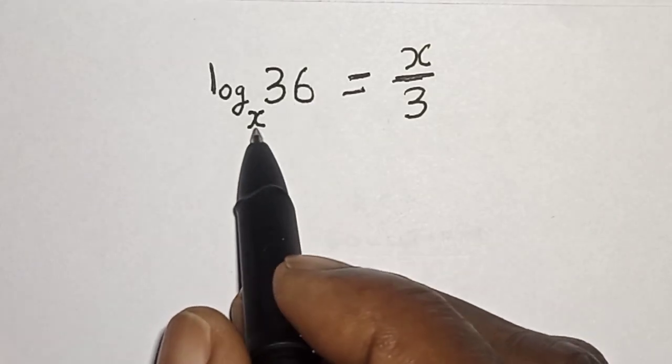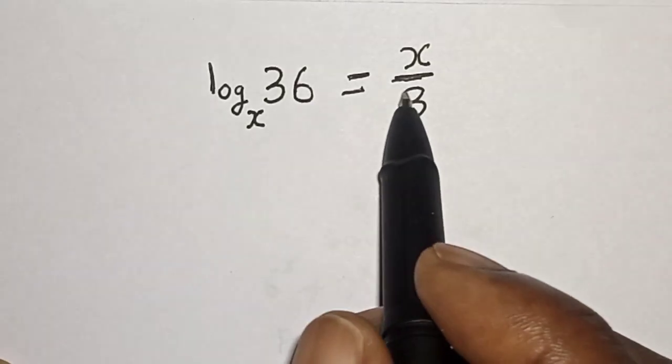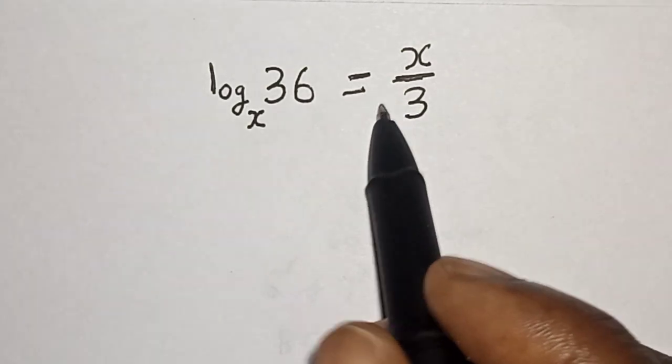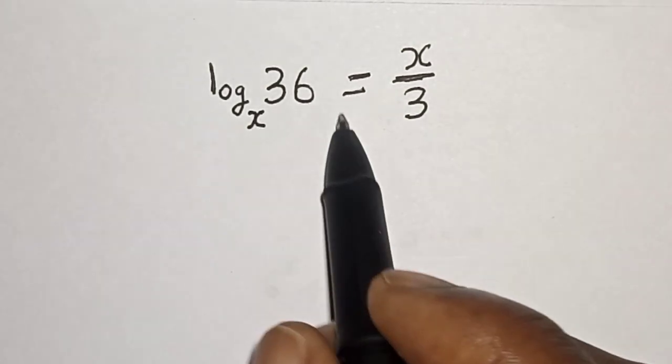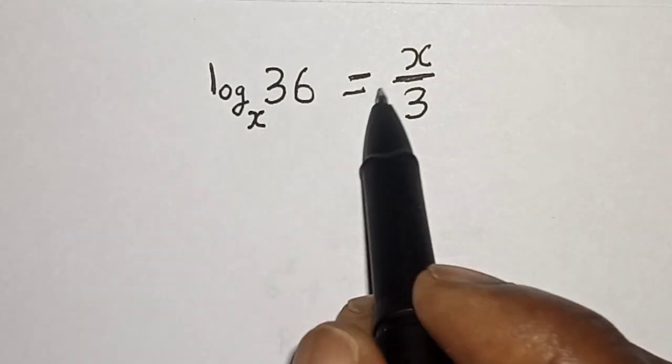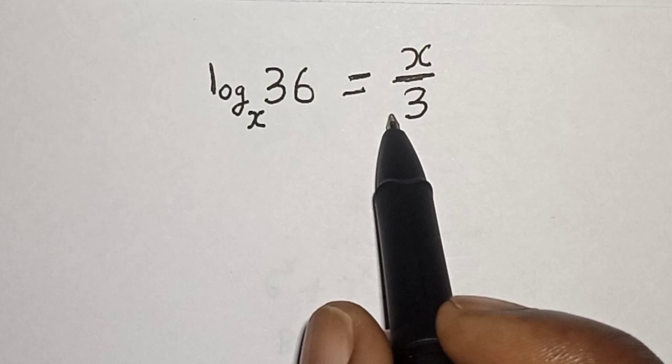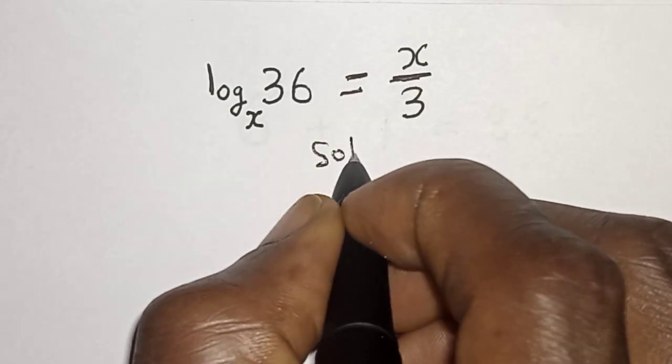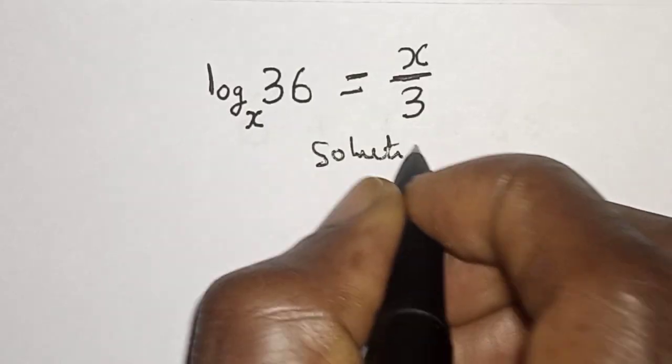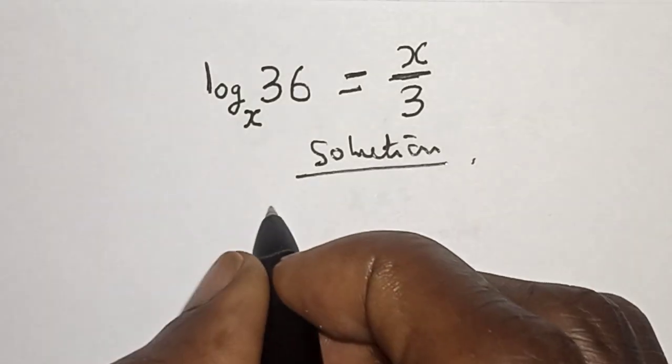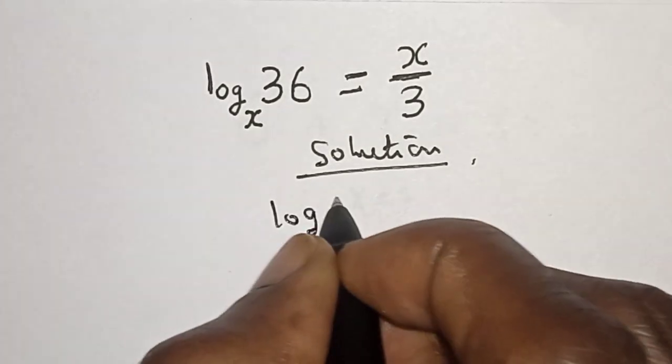log base x of 36 is equal to x divided by 3. Hi everyone, welcome to my class. In this class we want to find the value of x from this equation: log base x of 36 is equal to x divided by 3. But before we proceed, please don't forget to like, share, comment and subscribe. Thank you.